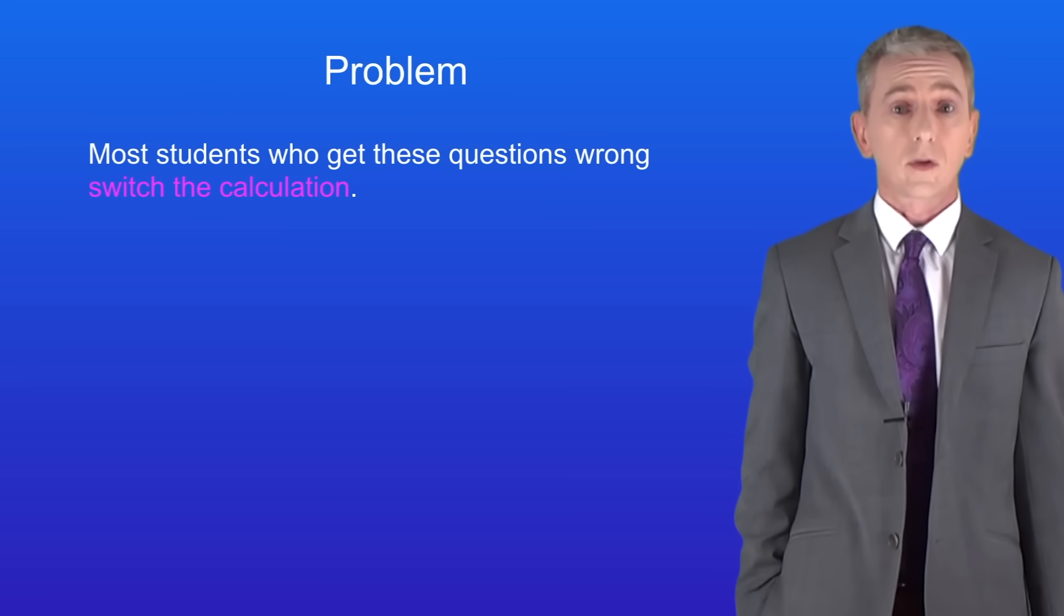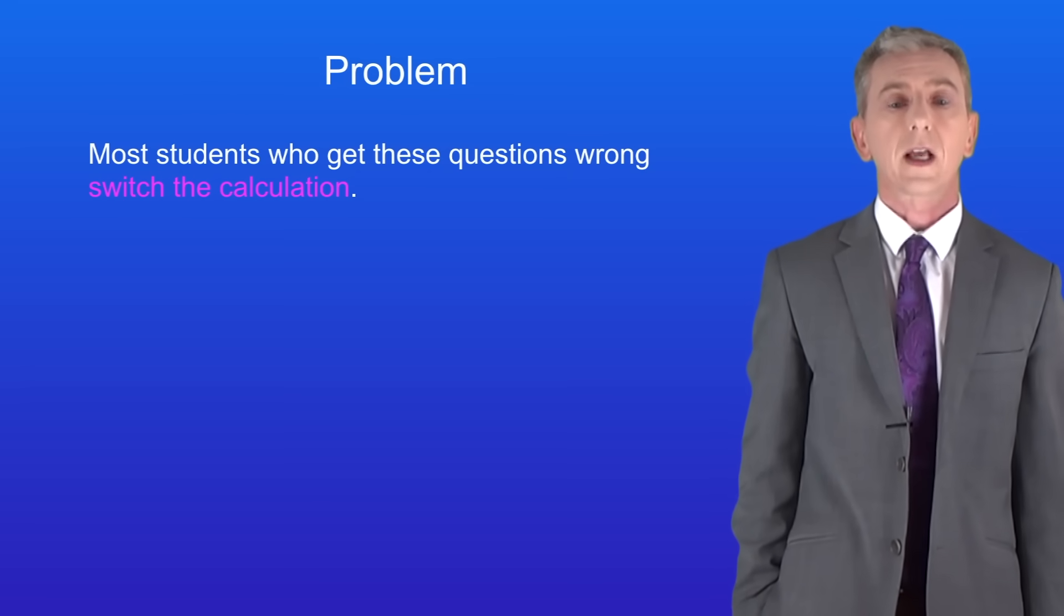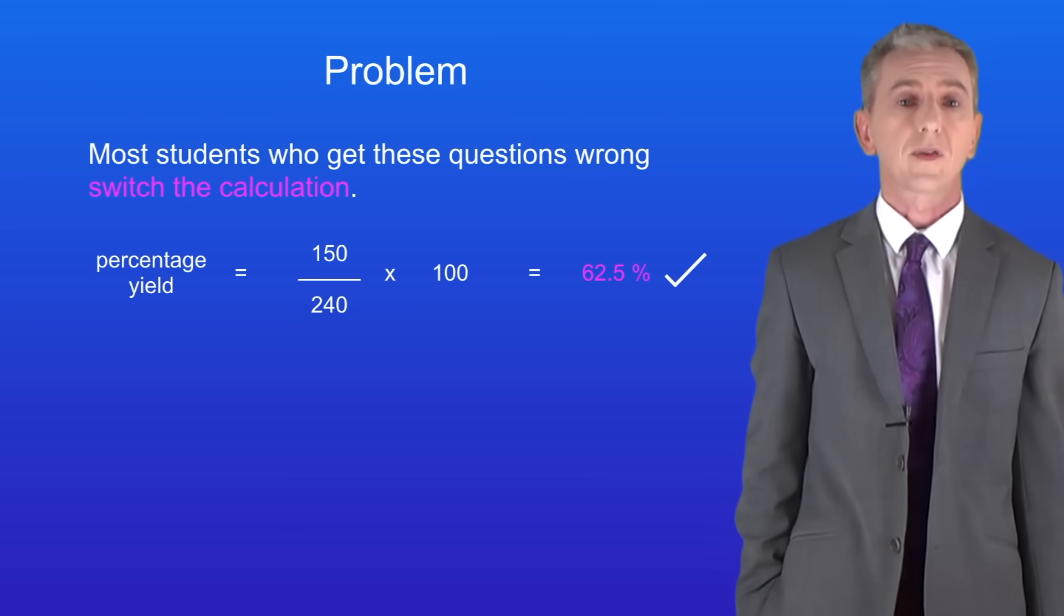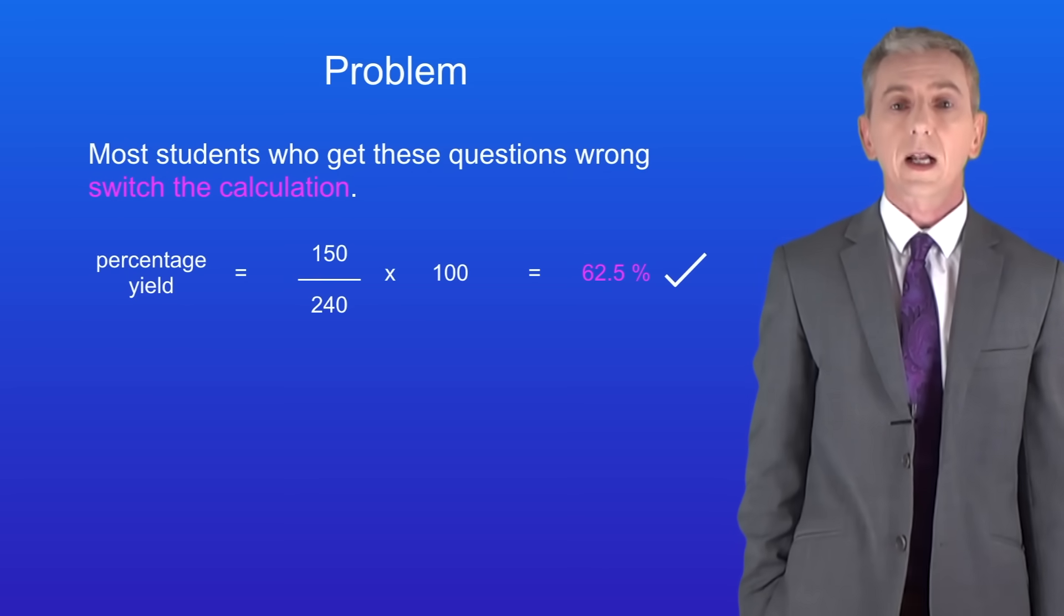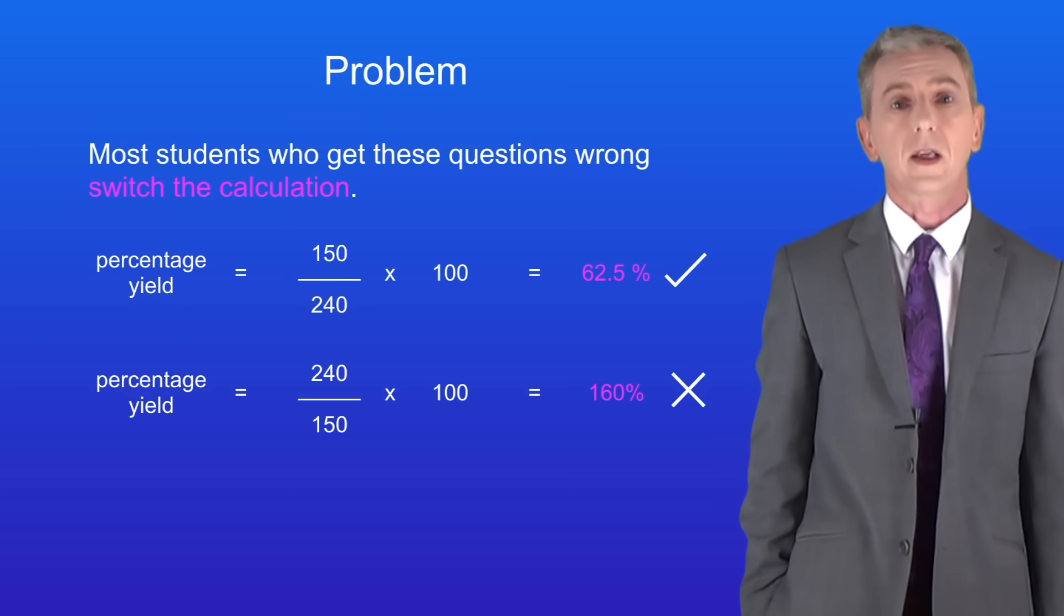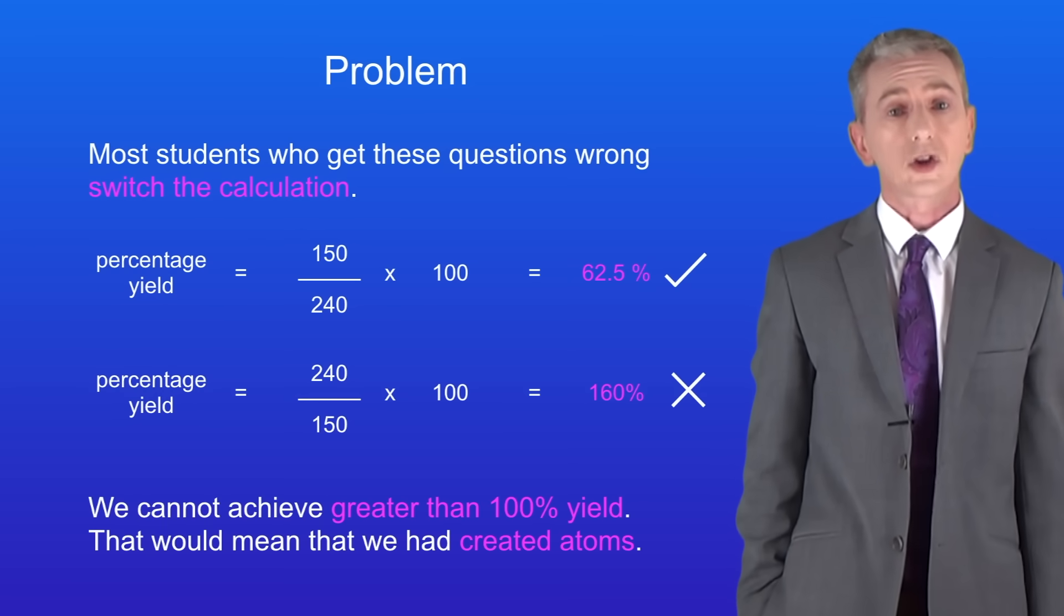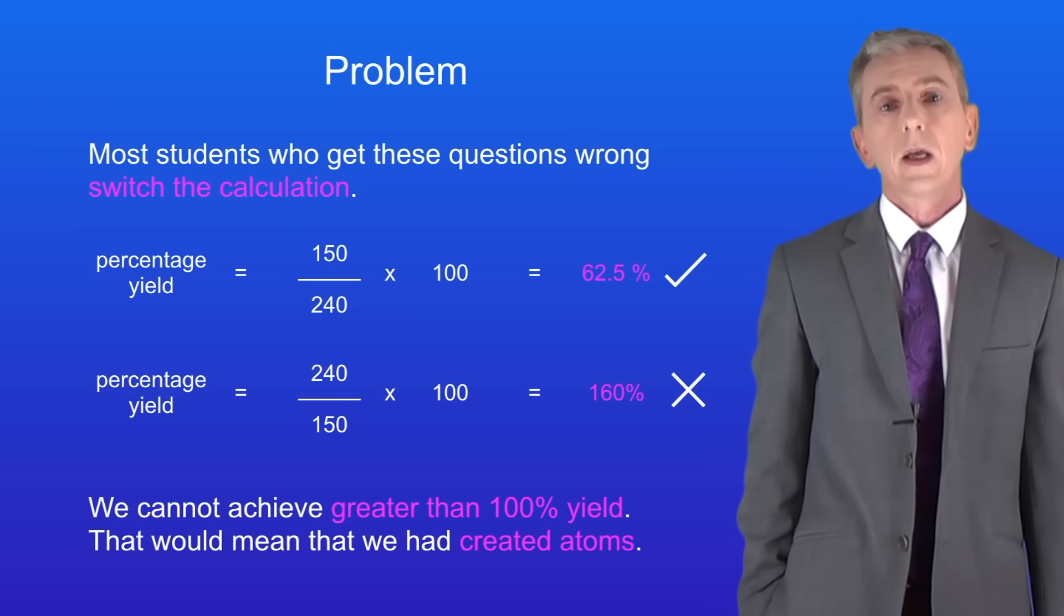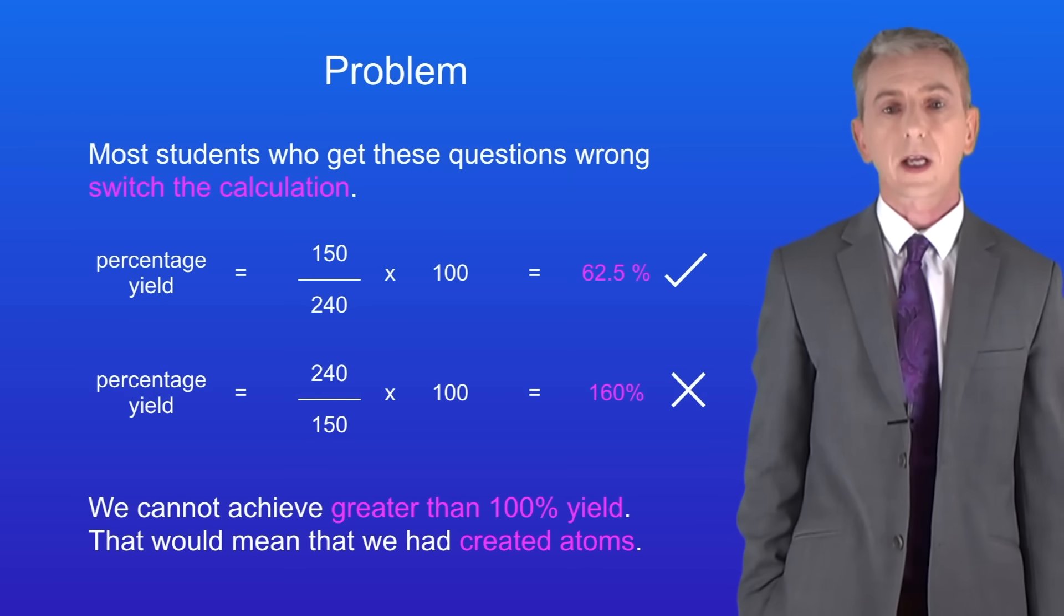Sometimes students get these questions wrong and the main reason is that they switch the calculation. So in this case the correct answer is 62.5% yield. If we switch the calculation like this then we can see that we achieve 160% yield. The key thing you have to learn is that we cannot achieve greater than 100% yield. That would mean that we created atoms and that's not possible. So in your answer if you achieve greater than 100% yield remember that you've switched your calculation.